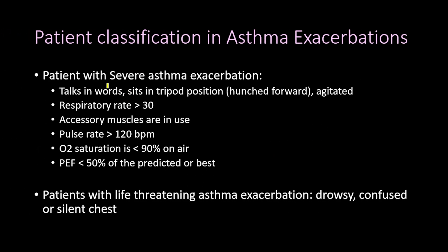For severe asthma exacerbation: the patient talks in words and cannot complete a whole sentence without taking a breath. They sit in a tripod position — hunched forward — and are agitated. Respiratory rate is higher than 30, pulse rate is higher than 120 beats per minute, oxygen saturation is less than 90% on air, and peak expiratory flow rate is less than 50% of predicted or their personal best.